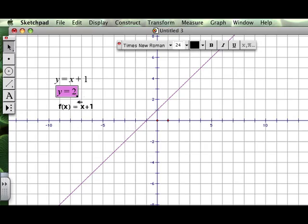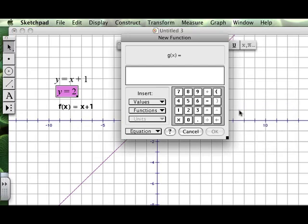For the other line, we could say that this is y equals 2. So we're going to plot the function, and I'm going to put down 0 times x plus 2.